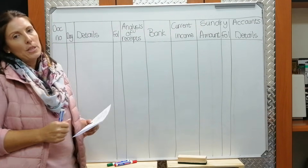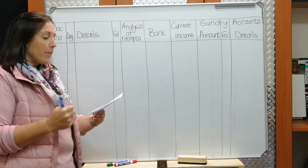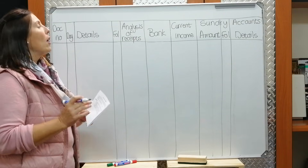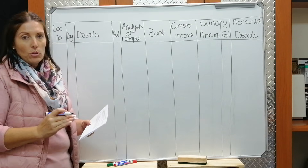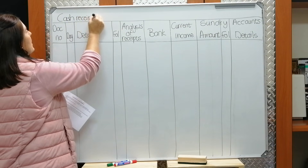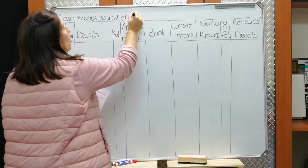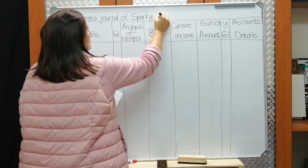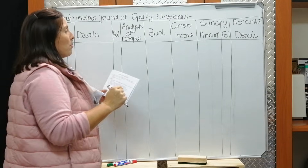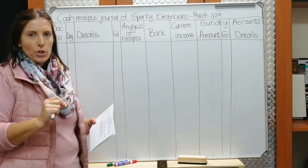Let's do this journal together on the whiteboard. We must close off the journal at the end of the month, and this is for March 2019. We always first start by giving a heading — this is very important. At the top we write: Cash Receipts Journal of, then the business name — Sparky Electricians — then a dash, then the month and year: March 2019.